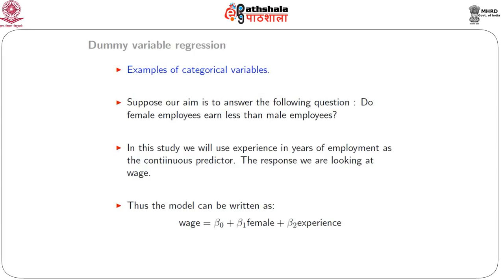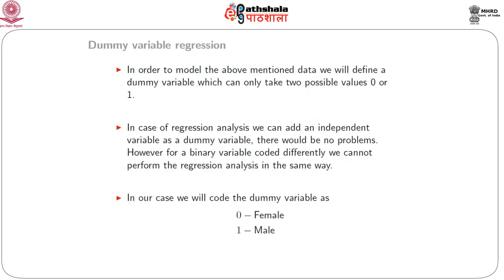The response variable is wage. The model can be written as: wage equals beta-naught plus beta-1 times female plus beta-2 times experience. To model this data, we define a dummy variable which takes only two possible values, 0 and 1. In regression analysis, we can add an independent variable as a dummy variable without any problem. However, for a binary variable coded differently, we cannot perform the regression analysis in the same way.